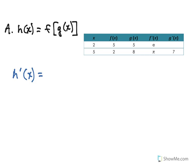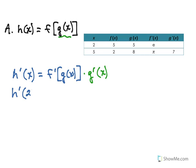Remember how the chain rule goes: we start on the outside and work our way in, taking one derivative at a time. The outside function in this case is f, so we start with f prime and keep the g function as it is. Then we go inside and take the derivative of the g function, multiplying by g prime of x. Since we specifically want h prime of 2, we fill in 2 for x, and then use the table of values to finish.